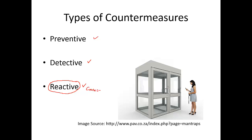In the CISSP certification, another term used is corrective. Corrective means you are trying to recover from an attack and get back to normal as soon as possible — taking action against an incident or compromise and restoring normal operations. So countermeasures and access control methods can come in three forms: preventive, detective, and reactive — or alternatively, preventive, detective, and corrective.